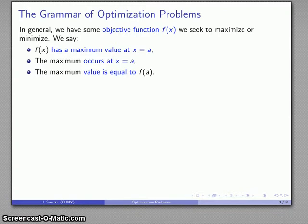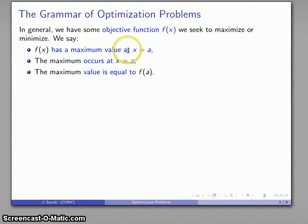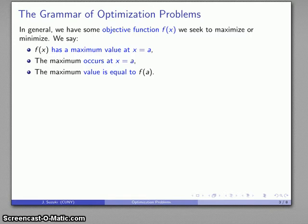Here's an important distinction. The x value always corresponds to what you might think about as a location — it's where the maximum occurs. At x equals a, it's located there. The actual value itself is always referring to the function value. The maximum value is a function value.